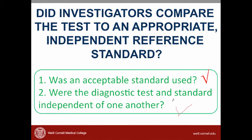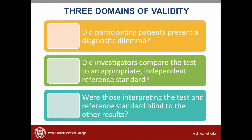The last domain is: were those interpreting the test and the reference standard blind to the other results — that is, were the diagnostic test and standard assessed without knowledge of the other results? In this study, we want to know whether the person who read the CT scan knew the results of the angiogram and vice versa. This is important because if the CT reader knew the angiogram results, she might be biased to interpret the CT similarly. Like trials on therapy, blinding is an important concept to minimize bias.